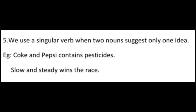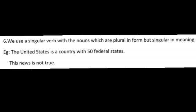Fifth rule: We use a singular verb when two nouns suggest only one idea. Examples: 'Coke and Pepsi contains pesticides.' 'Slow and steady wins the race.' Here you can see two nouns — Coke, Pepsi; slow, steady — but they come together and give only one idea, so we use a singular verb.